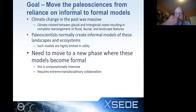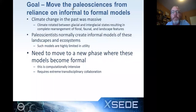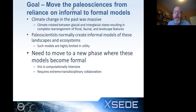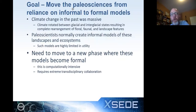In the past, the paleo sciences have relied on what we call informal models. In a paper co-authored with many colleagues, we argued we need to move from a reliance on informal models to formal models of climate and vegetation — formal models developed from mathematics. Climate change was massive, and instead of relying on informal models of what that change looked like, we need to harness the power of our climate models to make formal projections of the past.